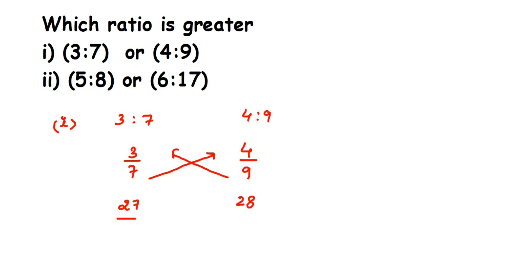So here 3 is to 7 is less than 4 is to 9, or 4 is to 9 is greater than 3 is to 7. Just cross multiply and see which product is greater, and that ratio or that fraction will be greater.